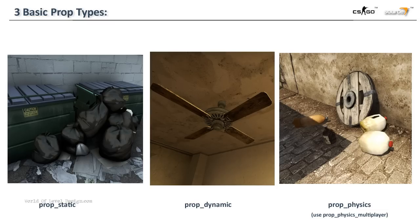There are three basic prop types inside Hammer Source that you will use to detail your map. Prop statics are the most common ones. These objects are static — they don't have any animation, they don't have any physics, and they are the most common ones used to detail the world. They are very inexpensive to render, so you can use a lot of them in the map.